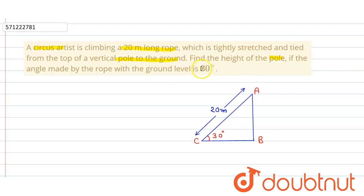As we can see in this figure, the angle of elevation is 30 degrees, and the length of the rope is equal to 20 meters, which is stretched. Then we have to find the height of the pole.